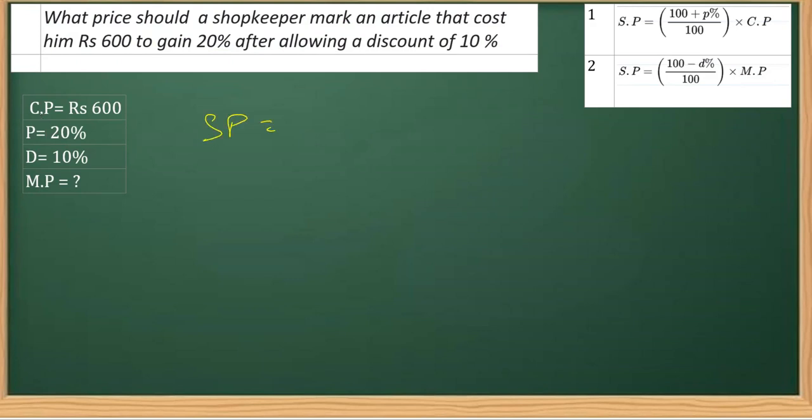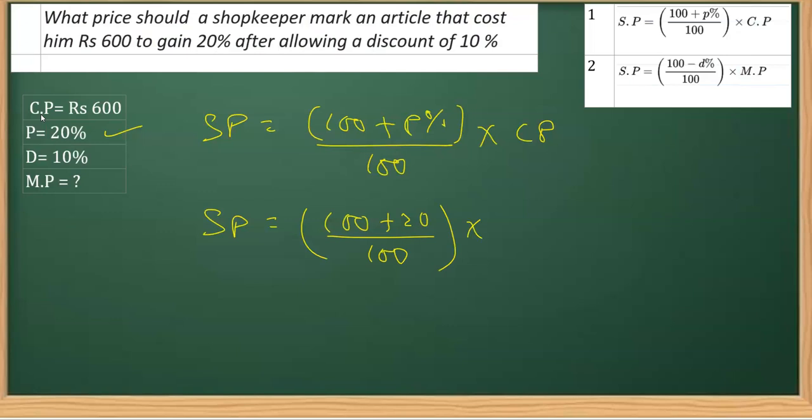Let's apply the first formula. It says SP is equal to 100 plus P percent, that's profit percent, divided by 100 multiplied by the buying price, that is CP here. So if you use this formula, we get, replacing P with its value, that is 20 percent. So it's 100 plus 20 over 100 multiplied by the CP, the buying price which is 600 here.